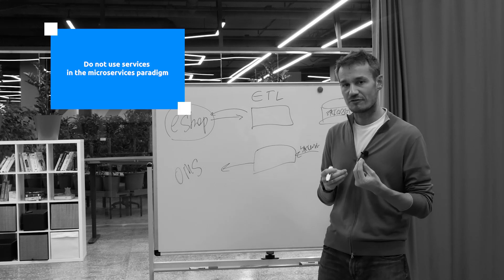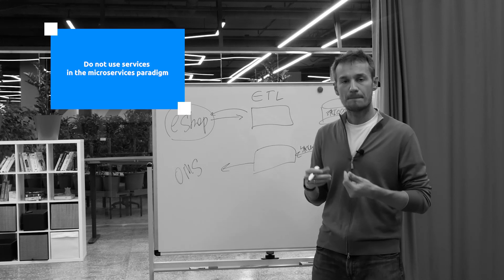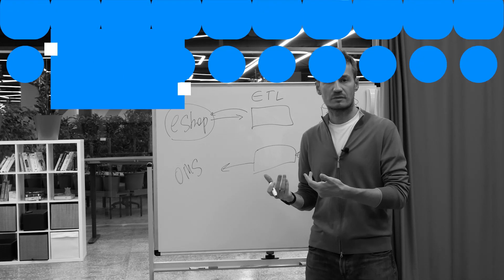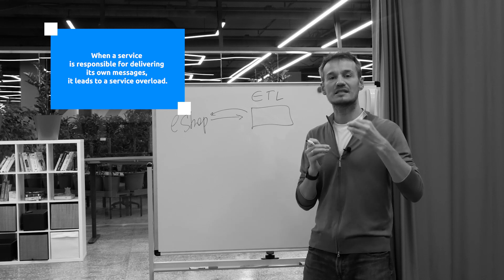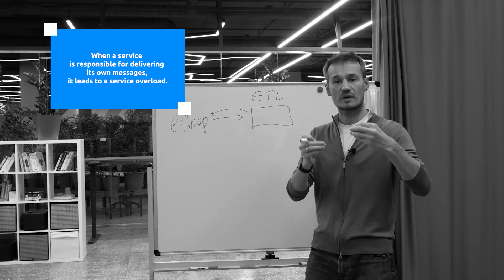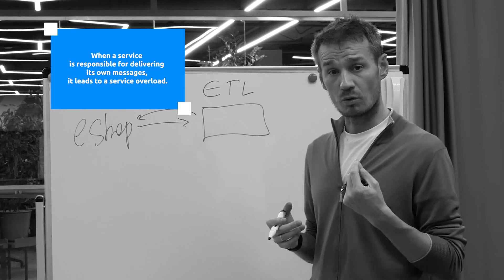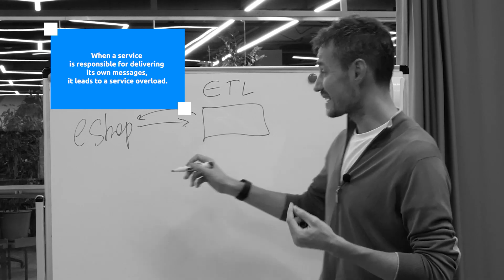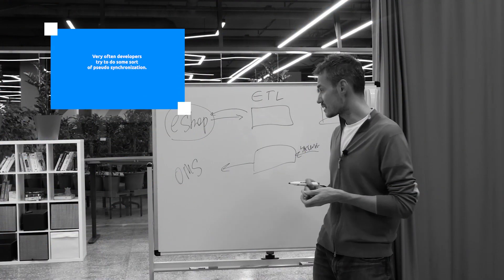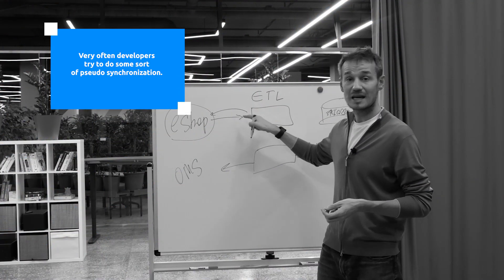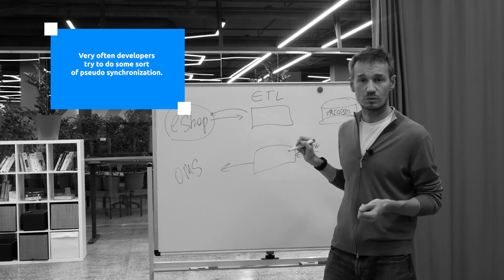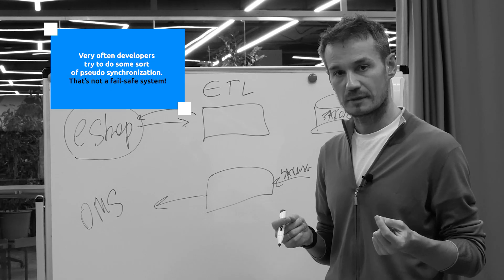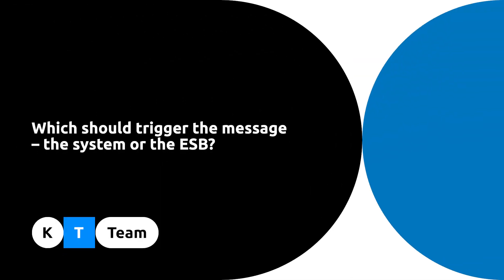Do not use services in the microservices paradigm to deliver their own messages. When a service is responsible for delivering its own messages, it leads to a service overload, because very often developers try to do some sort of pseudo-synchronization. That's not a fail-safe system. Which should trigger the message — the system or the enterprise service bus?